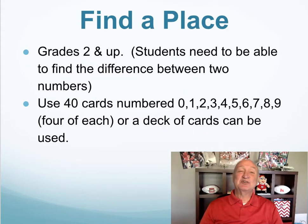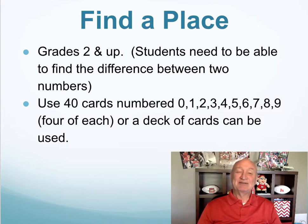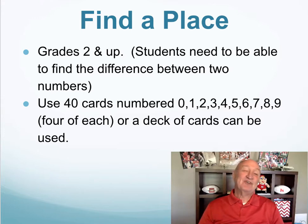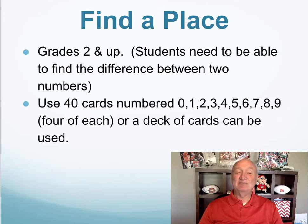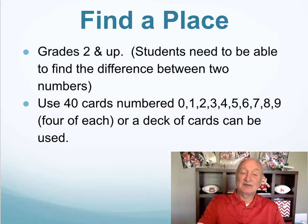Find a Place is a game for students who are able to find the difference between two three-digit numbers. And with any game, it's also about place value and also finding some probability and seeing what happens when you're playing with cards. All you need to play is a game sheet and 40 cards numbered zero through nine, four of each one. Or you can use a deck of cards, using a 10 for a zero and an ace for a one, and then getting rid of the other cards.